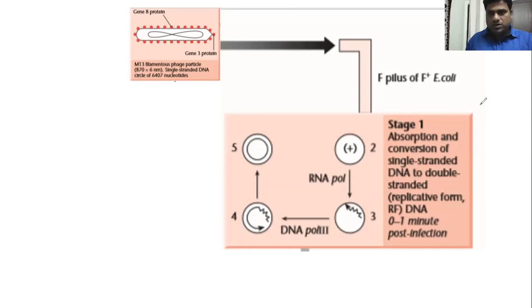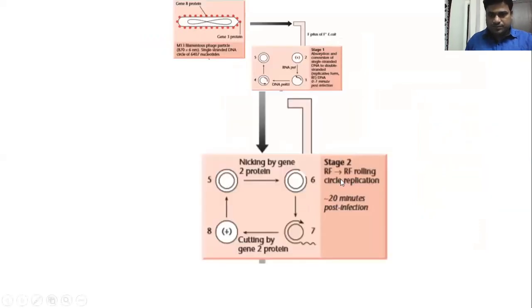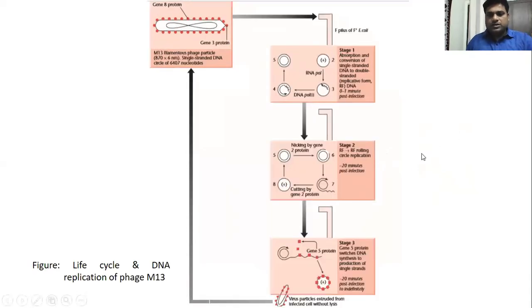There are several steps. Gene 2 protein is going to create a nick here. Then there is replication by rolling circle model coded by gene 2 protein. This takes around 20 minutes.